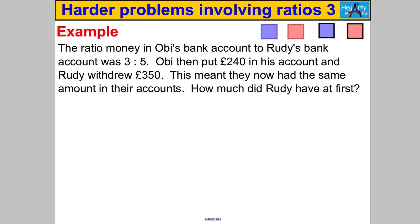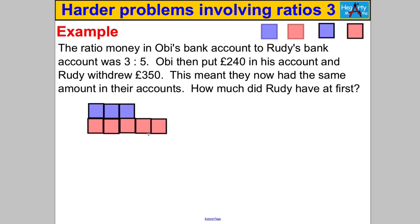Let's try another one. The ratio of money in Obie's bank account to Rudy's bank account is 3 to 5. Let's draw that picture — Obie and Rudy in the ratio 3 to 5. Obie then puts 240 pounds in his bank account and Rudy withdraws 350 pounds, and they now have the same amount. How much did Rudy have first? We have a before and after situation.